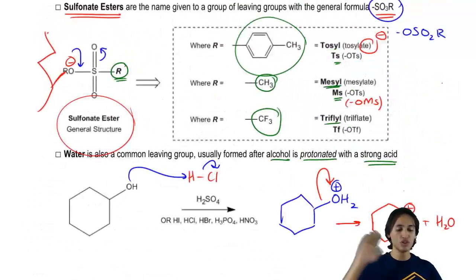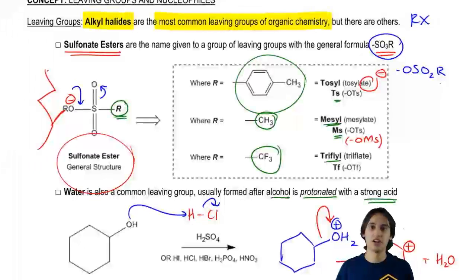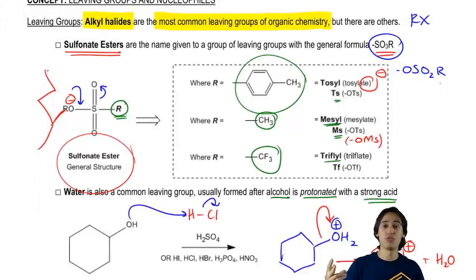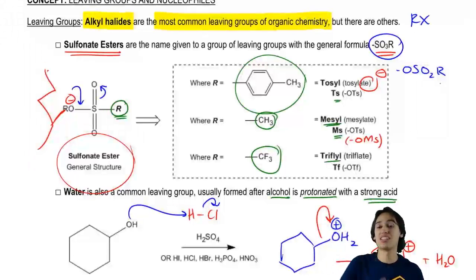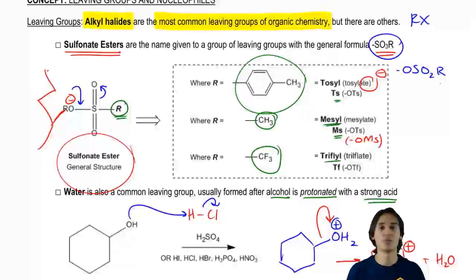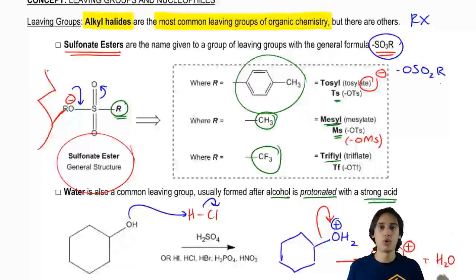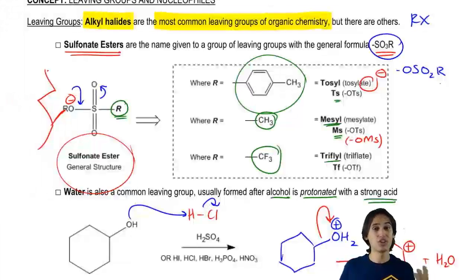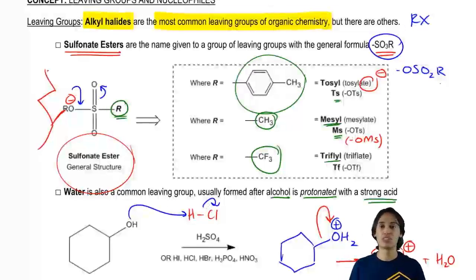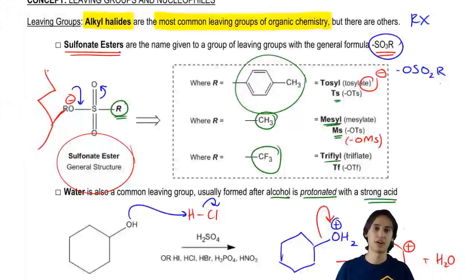So here's the overall general idea: alkyl halides are the most important and you'll see them all the time. If you see a sulfonate ester indicated by abbreviations like OMS or OTS, don't worry about it too much — just treat it the same as an alkyl halide. If you see water formed from an alcohol with a strong acid, treat it the same way. The whole point is just that it leaves. These are really the three main leaving group categories we see — don't worry about anything else.